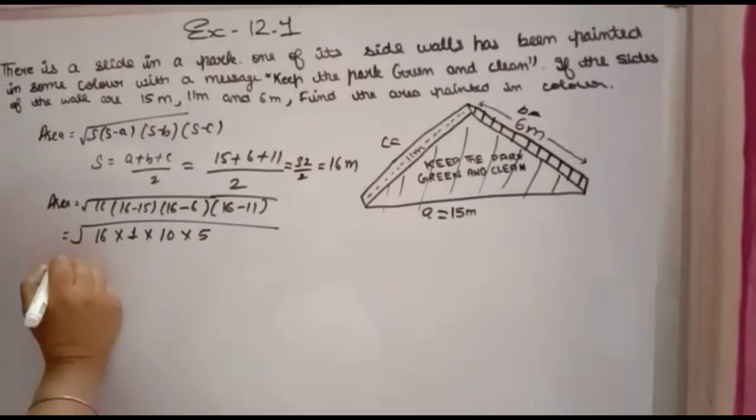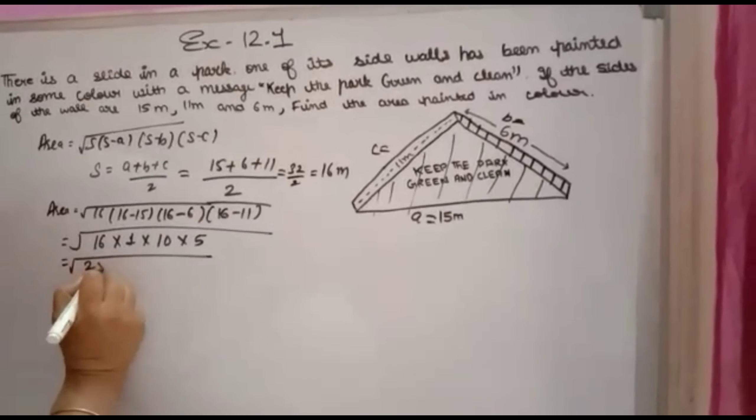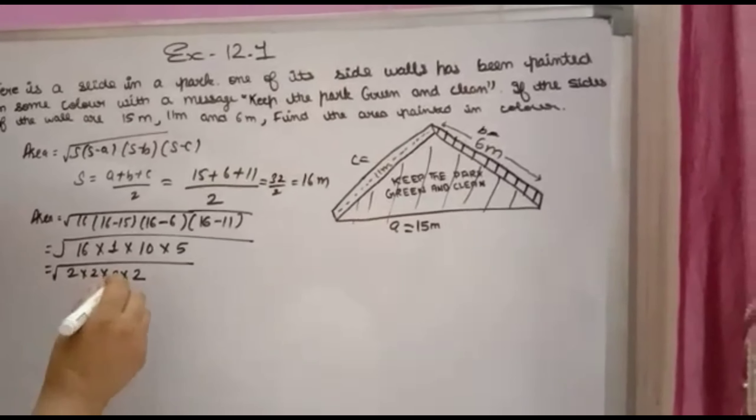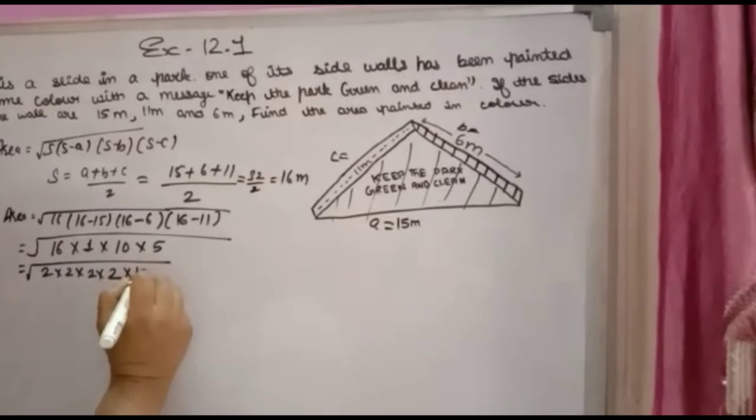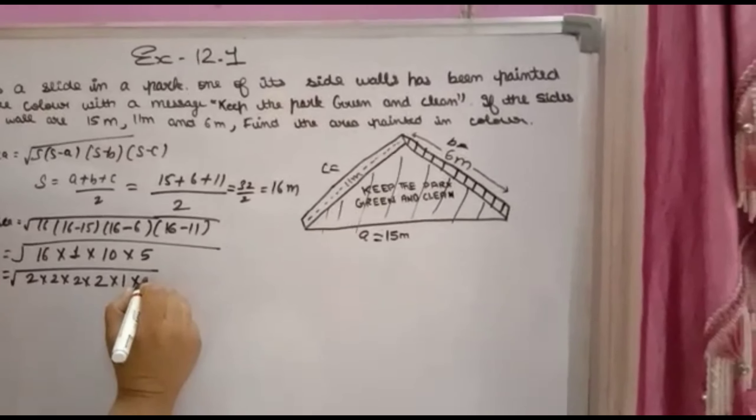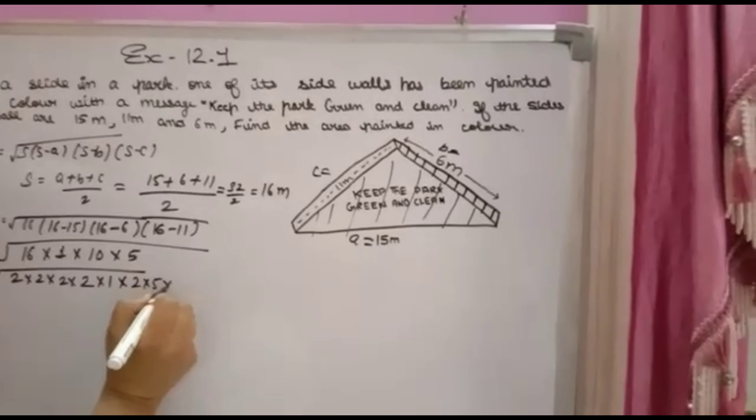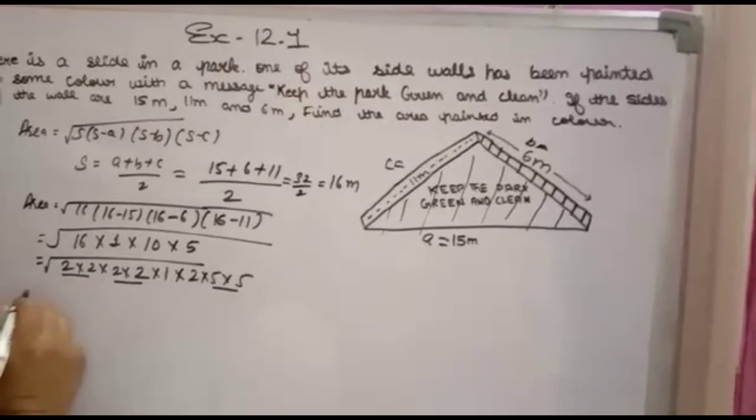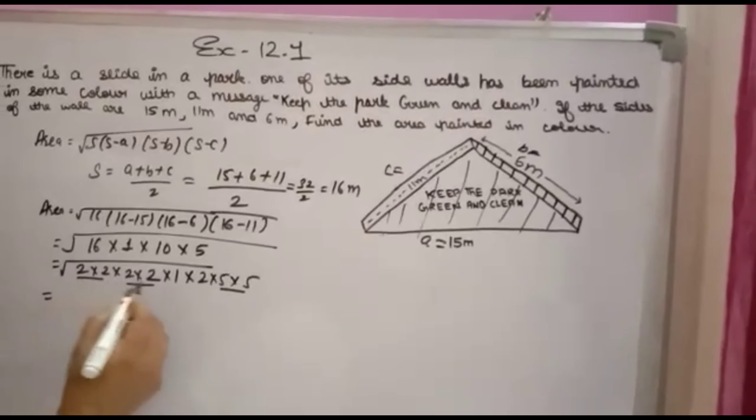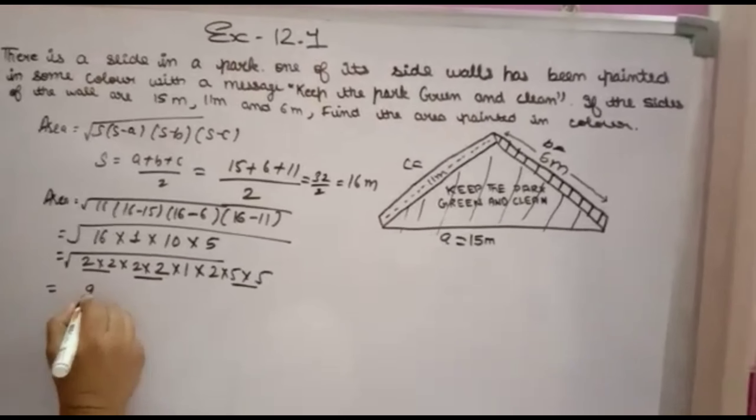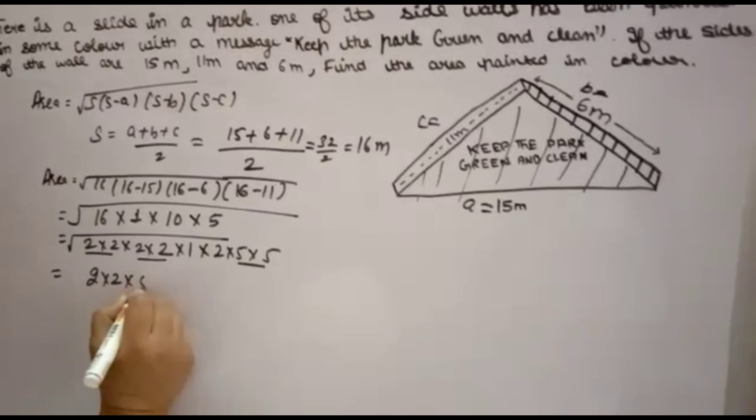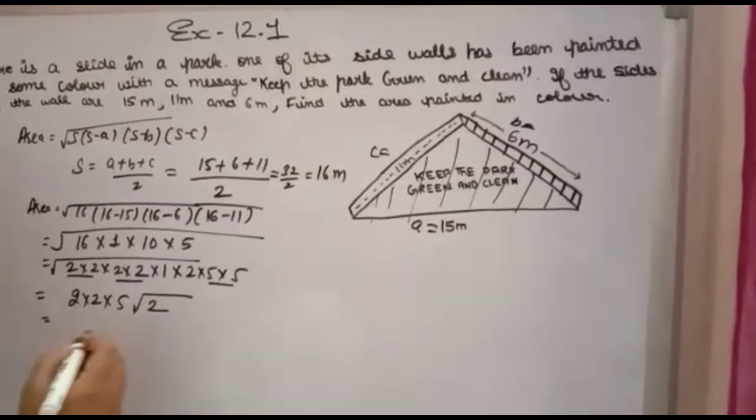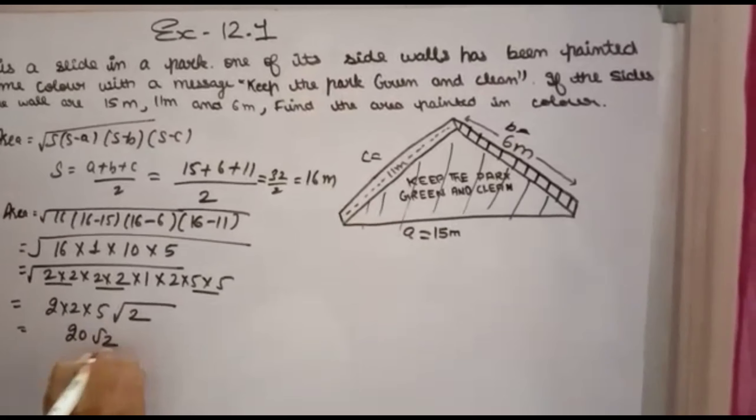16 can be written as 2×2×2×2, 1 as is, 10 = 2×5, and 5 as is. Now pairing because square root is there, you will take 2×2×5 out, and 2×1, so 2 remains inside. 2 to the power 4, 4×5 = 20, so 20√2.